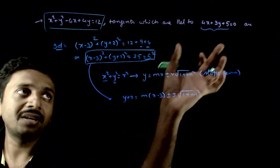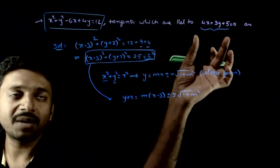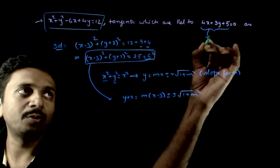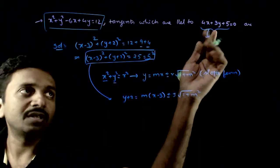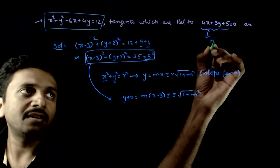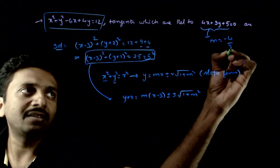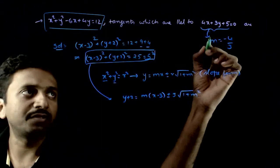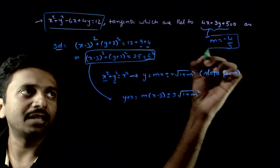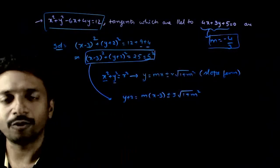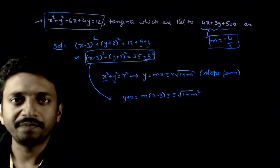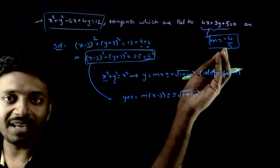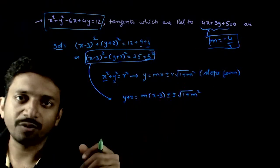I want the tangent parallel to the given line. Parallel means the slope is the same. What is the slope? Minus 4 by 3 — minus of the x coefficient divided by the y coefficient. So the slope of the tangent has to be minus 4 by 3.